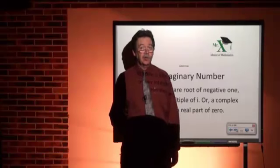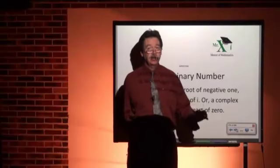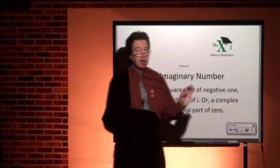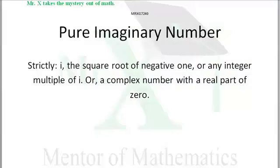Hi, Mr. X with glossary term: pure imaginary number. Most strictly, it's i, the square root of negative one. Slightly less formally, it's any multiple of i, or a complex number that has a real part of zero.